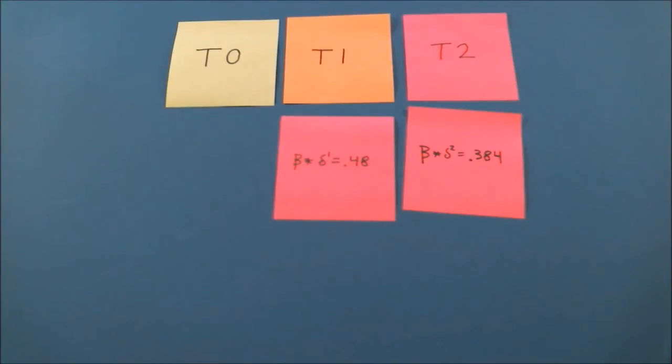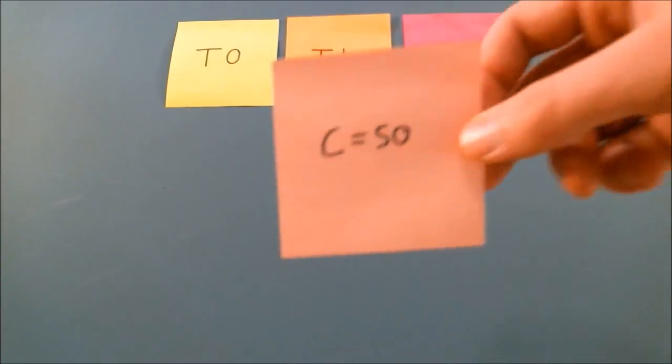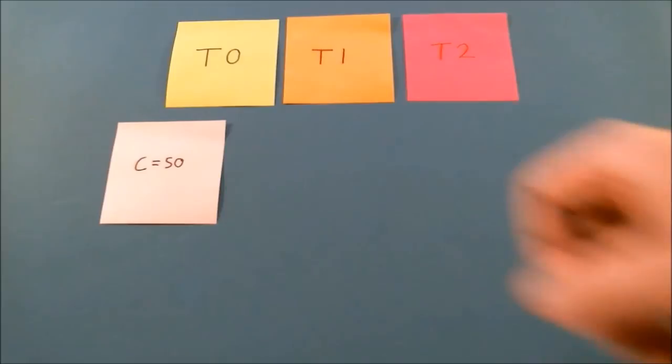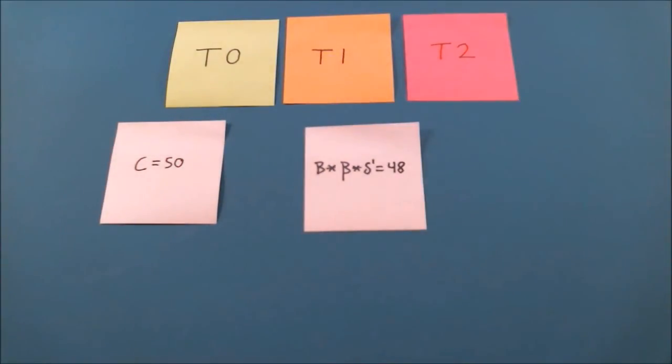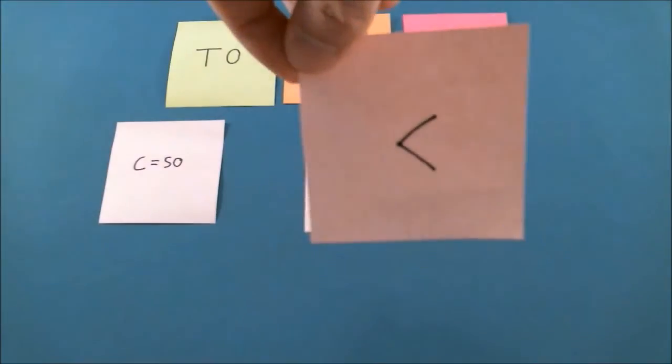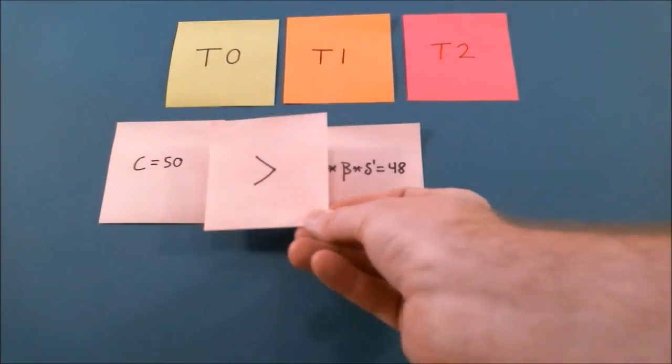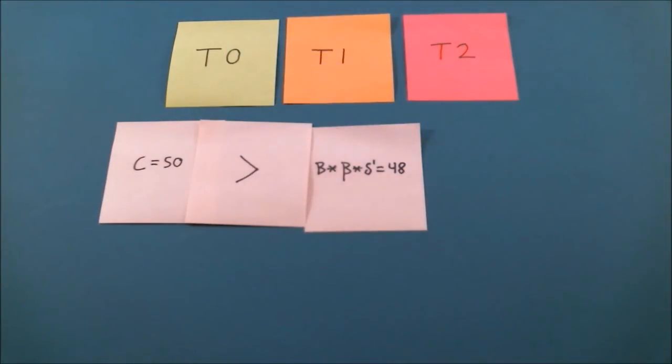But when the time comes for me to eat better, I no longer discount the cost and face the full 50, which is now less than the discounted benefit in T1. Eating better, or whatever I need to do right now to reach a future goal, no longer seems worth it, so I keep eating cheese beans.